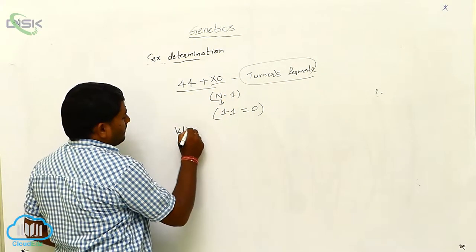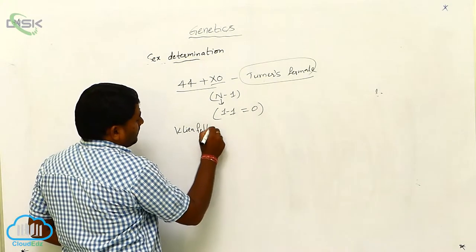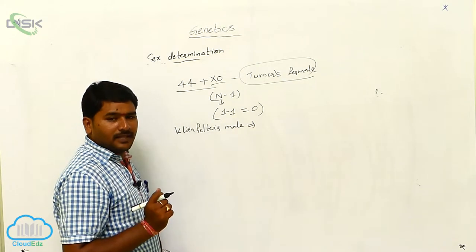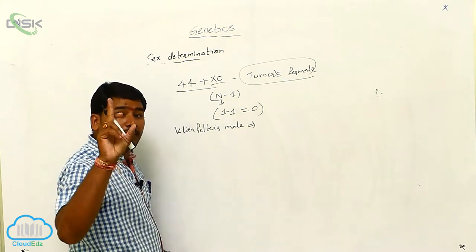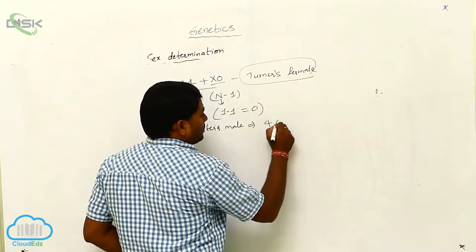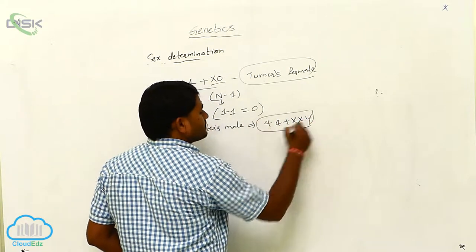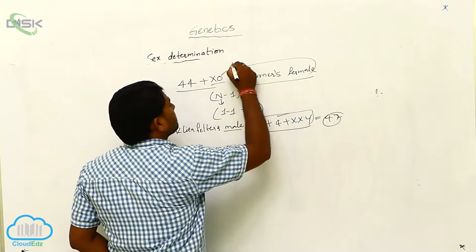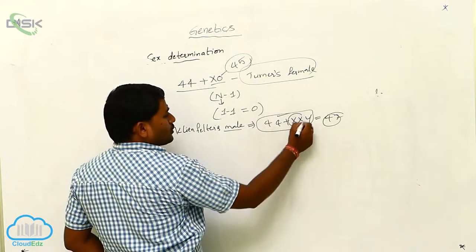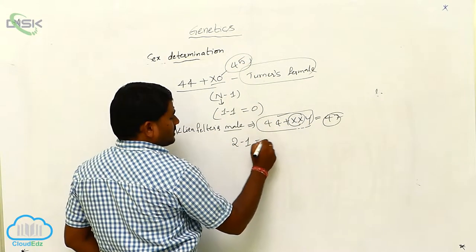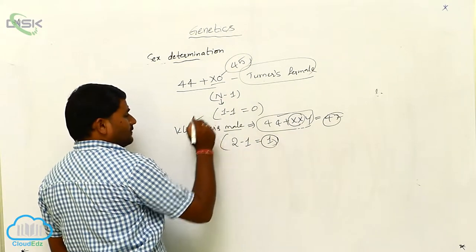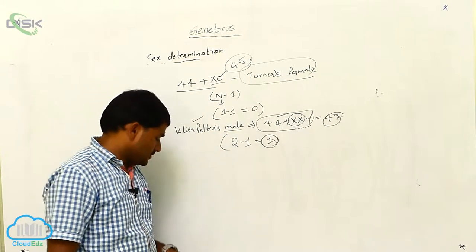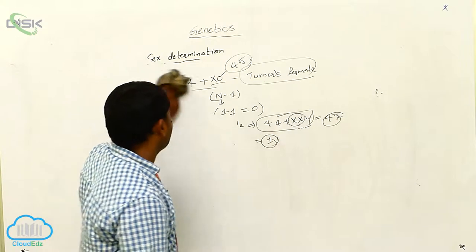Now consider Klinefelter's male: 44 plus XXY. It is male, but the karyotype has a total of 47 chromosomes. The number of X chromosomes is 2, so 2 minus 1 equals 1. Normally males are without bar bodies and females have one bar body, but Klinefelter's male has 1 bar body even though it is male. This is the significance of bar bodies.